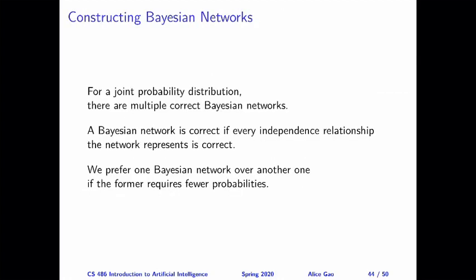This is in fact true in general. So if we're given a particular joint probability distribution, then we can come up with multiple correct Bayesian networks. What do I mean by correct here? A Bayesian network is correct if the independence relationships that the network represents actually exist in the joint probability distribution — whether unconditional or conditional independence. If two variables satisfy some sort of independence relationship based on the Bayesian network, then they better also satisfy the same relationship in the joint probability distribution. As long as this property is satisfied, we say that the Bayesian network is correct.